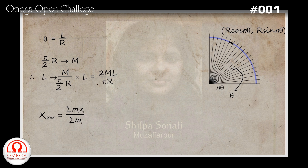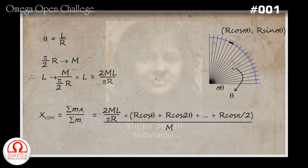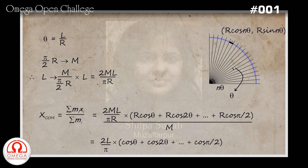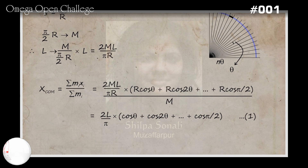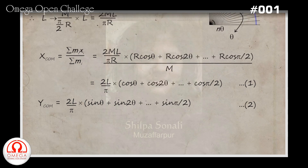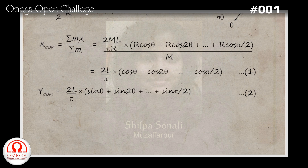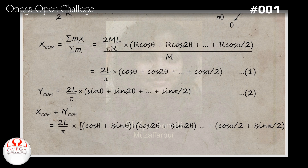The x-coordinate of the center of mass is given by the summation of m_i x_i divided by the summation of m_i. Putting in the values, we get (2ml by pi r) into r times [cos theta + cos 2theta + ... + cos(pi by 2)], all divided by m. Simplifying, we get 2l by pi into [cos theta + cos 2theta + ... + cos(pi by 2)]. Similarly, the y-coordinate of the center of mass is 2l by pi into [sin theta + sin 2theta + ... + sin(pi by 2)].